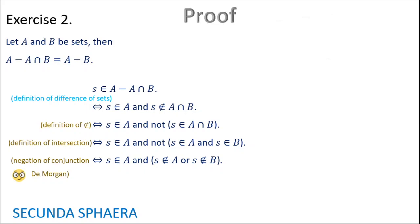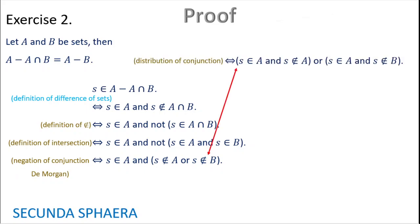This is one of De Morgan's laws. In this case, we have a conjunction of which one of the terms is a disjunction, so we can distribute the conjunction. We get: s is in A and s is not in A, OR s is in A and s is not in B. S in A is the first term in each of the conjunctions.